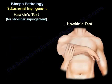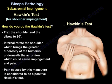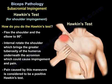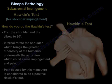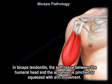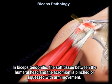How do you do the Hawkins test? Flex the shoulder and the elbow to 90 degrees, then internally rotate the shoulder. This will bring the greater tuberosity of the humerus underneath the acromion, which could cause impingement and pain. Pain caused by this maneuver is considered a positive Hawkins test. In biceps tendonitis, the soft tissue between the humeral head and the acromion is pinched or squeezed with arm movement.